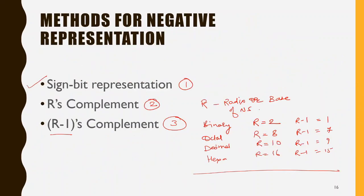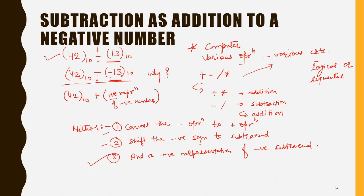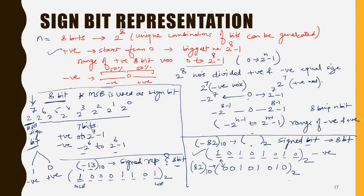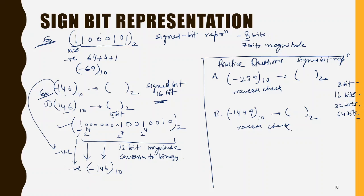In today's lecture, we have seen that subtraction can be done as addition by converting the negative sign into a binary representation. There are three methods to represent a negative number: in this lecture we covered sign bit representation; in the upcoming lectures we will do r's complement and r-1 complement. Do the practice questions and review the examples — see you in the next video.